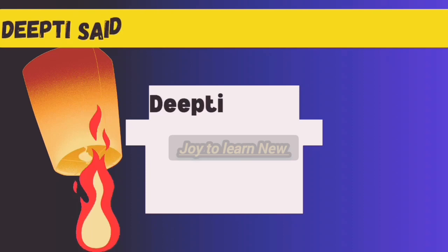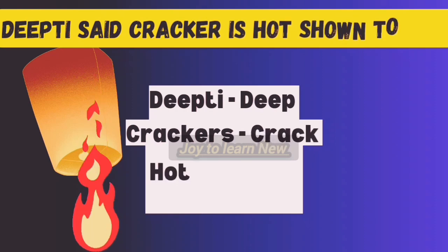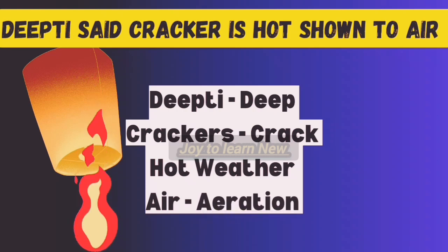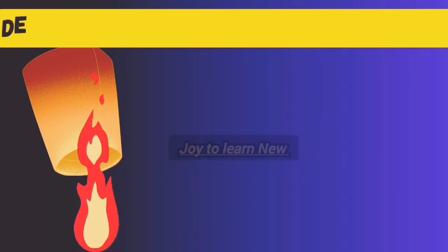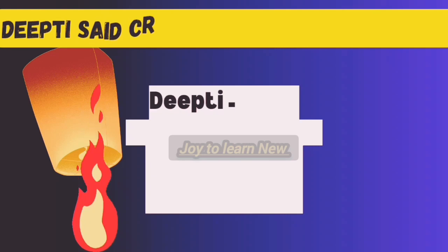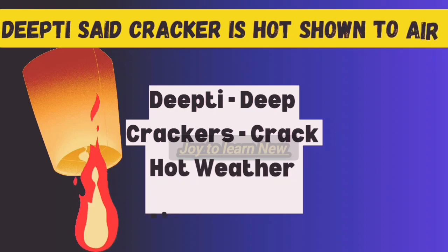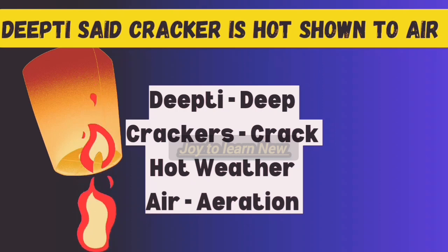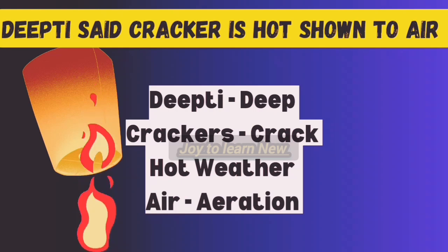The next shortcut is 'Deepthi said cracker is hot, so she showed the crackers in air.' Deepthi represents Deep, crackers represents Crack — Black Soil develops deep cracks. Hot represents hot weather, and air represents aeration, which helps in the proper aeration of the soil. So this soil develops deep cracks during hot weather, which helps in the aeration of the soil.